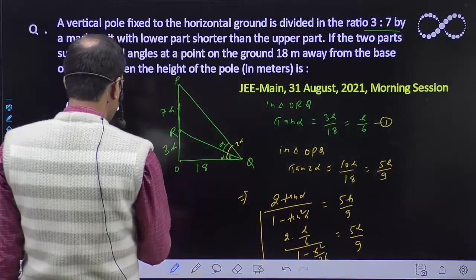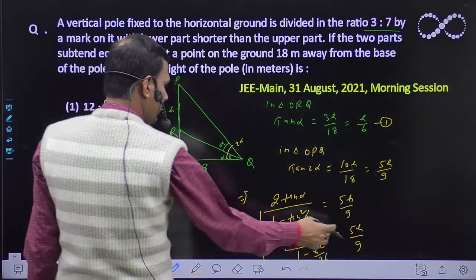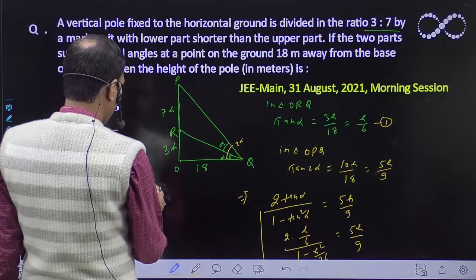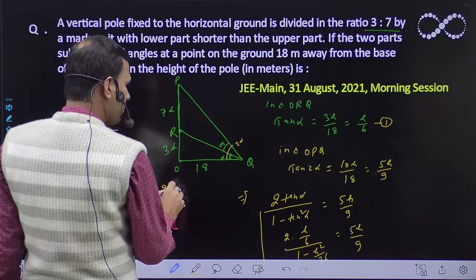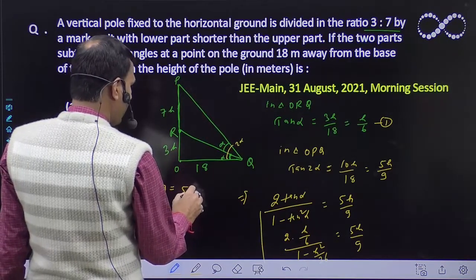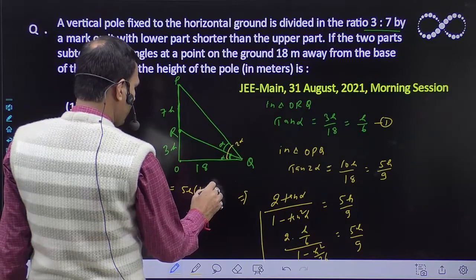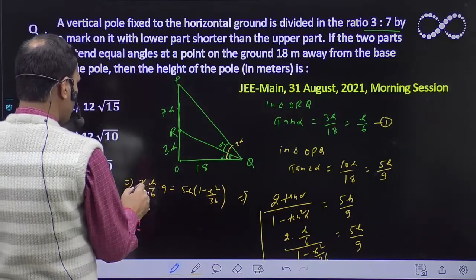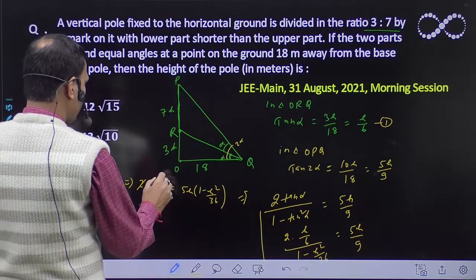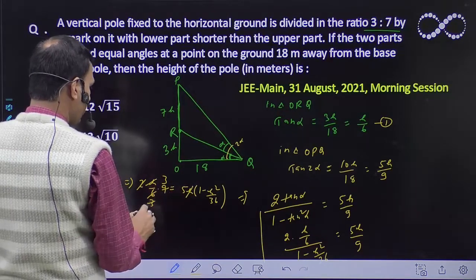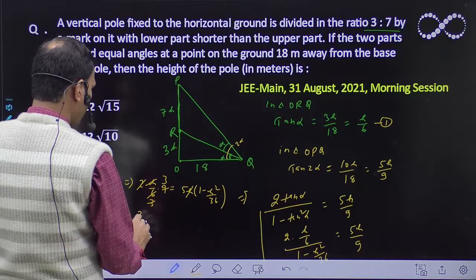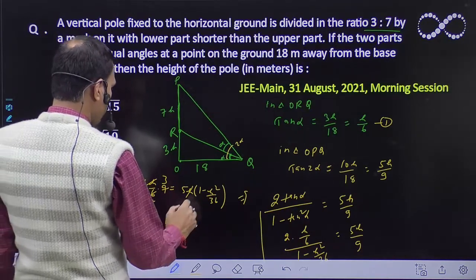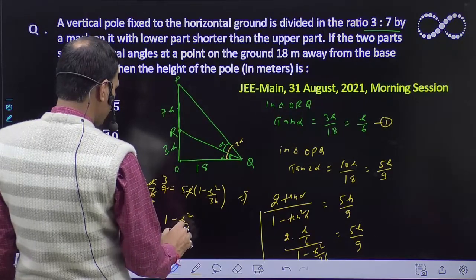Now from the first equation, let's put this value of tan alpha. So 2 into h upon 6 upon 1 minus h square upon 36 equals 5h upon 9.